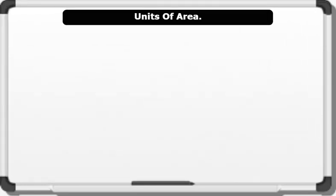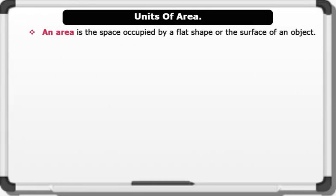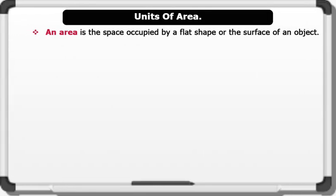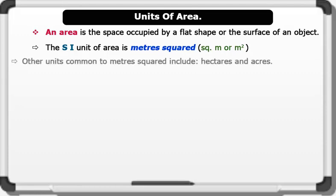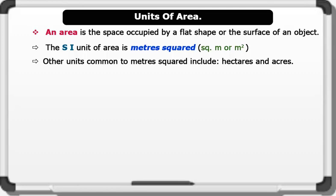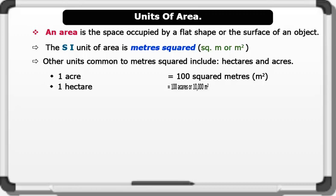Units of Area. An area is the space occupied by a flat shape or the surface of an object. The SI unit of area is meters squared. Other units common to meters squared include hectares and acres. Other derivations include: 1 acre equals 100 square meters. 1 hectare equals 100 acres.